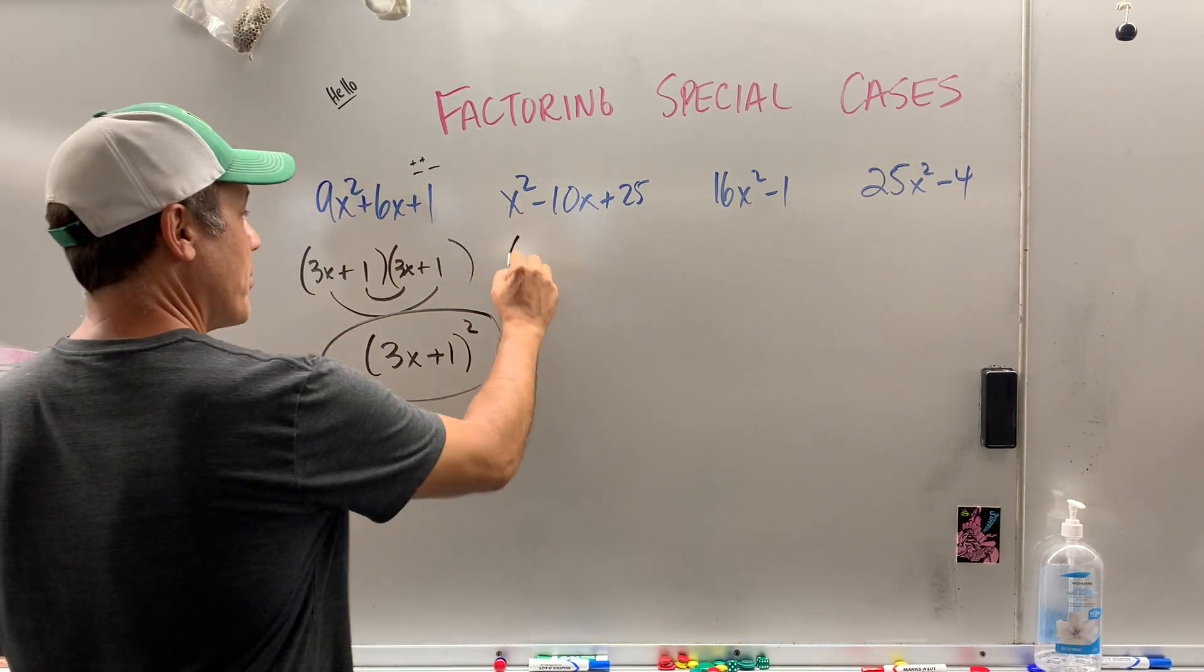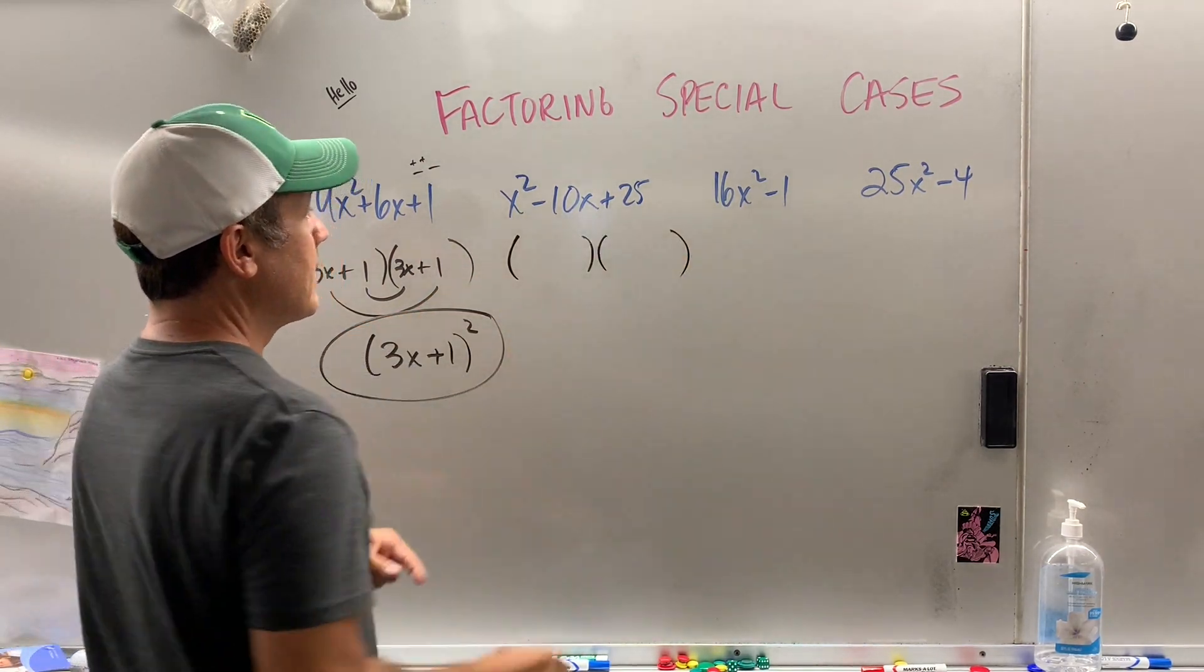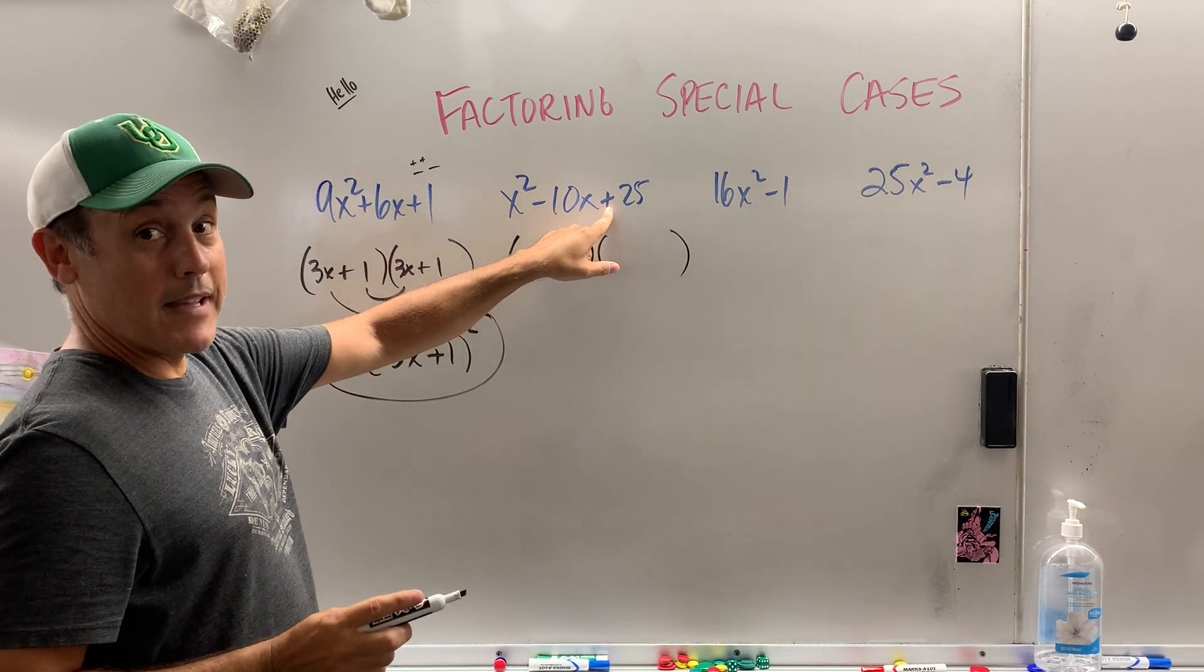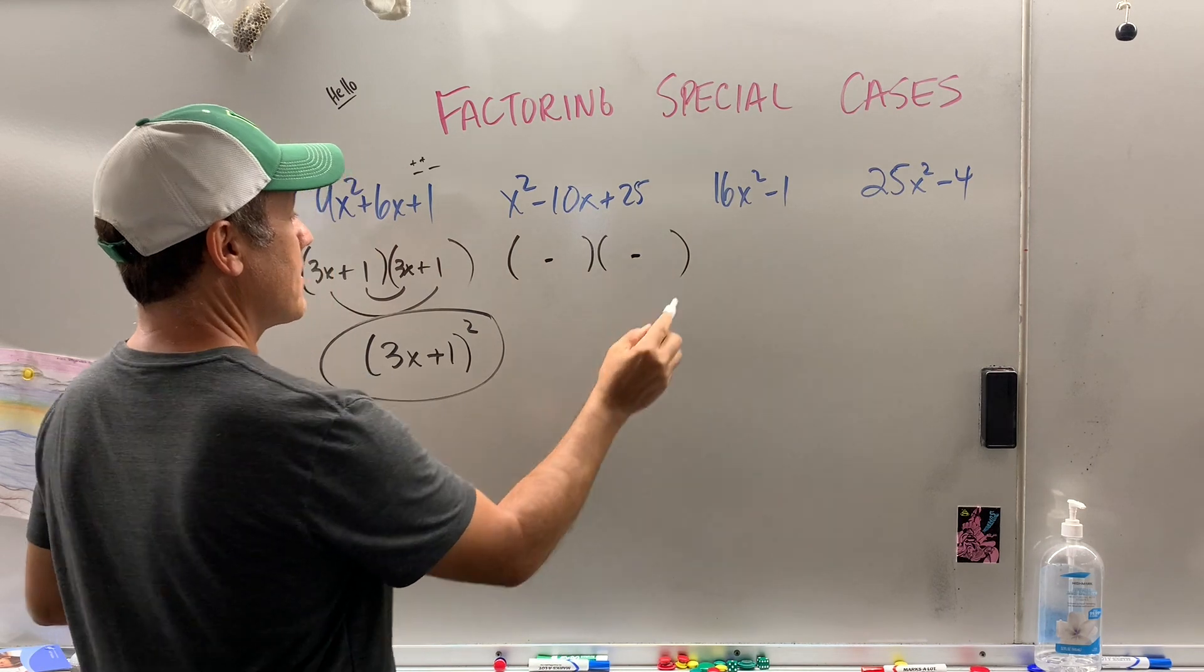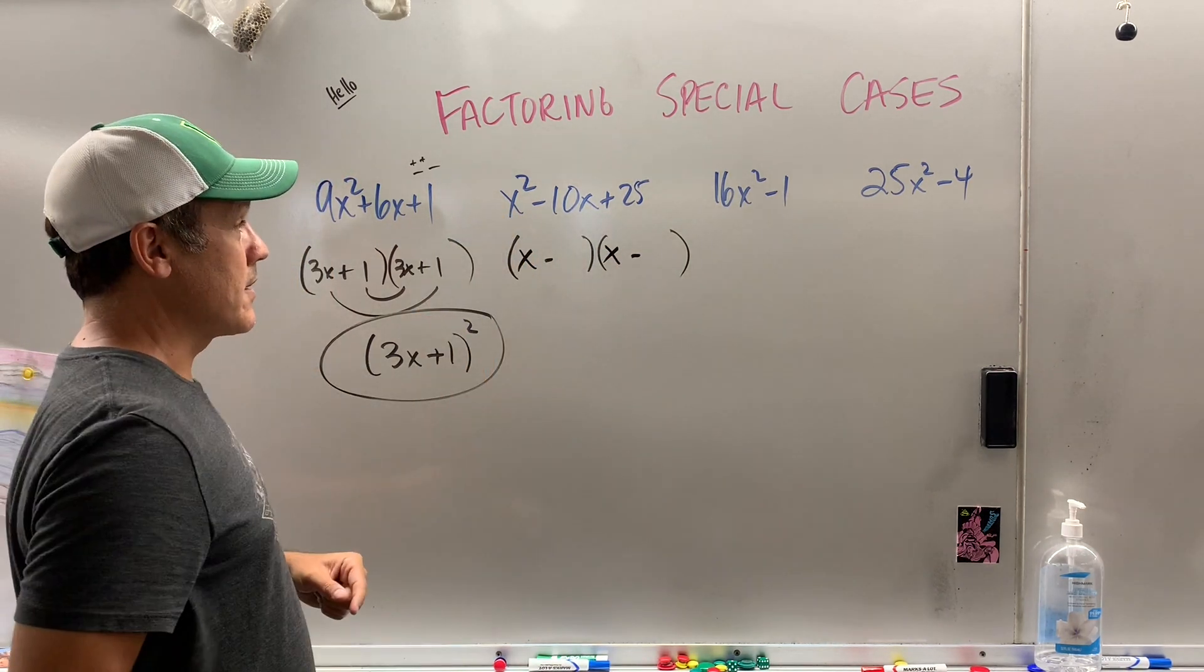Over here, parenthesis, parenthesis. Okay, what sign times what? Plus, plus, minus, minus? Ooh, there's a minus, so I know it's going to be minus, minus. x and x, because that's the only thing that gives you x squared.